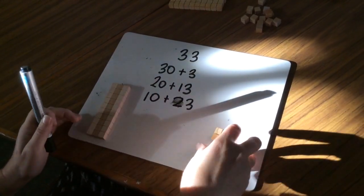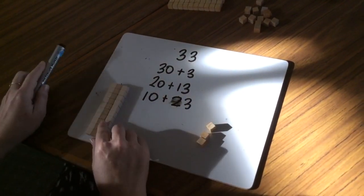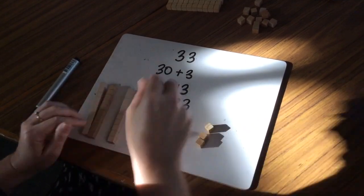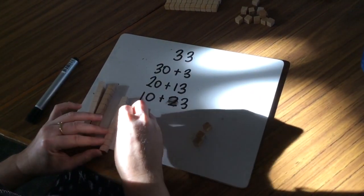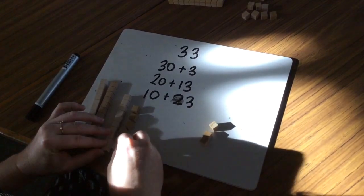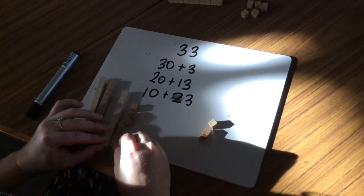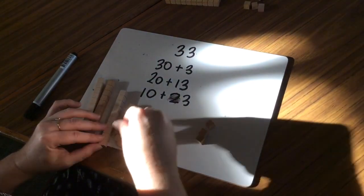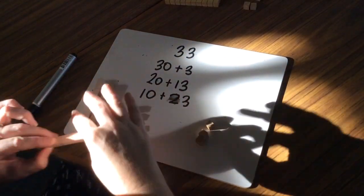Now if I want to look at breaking it up even further, for people who are very good at doing this sort of thing, I can trade one of my tens for 10 ones: 1, 2, 3, 4, 5, 6, 7, 8, 9, 10.